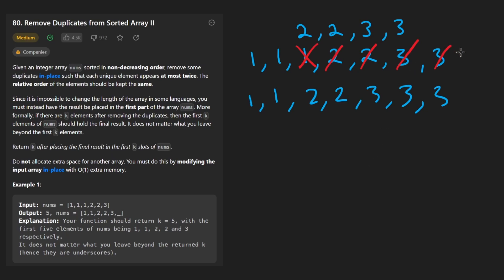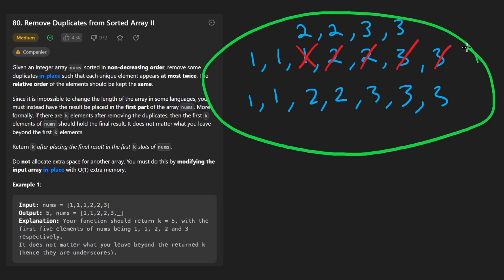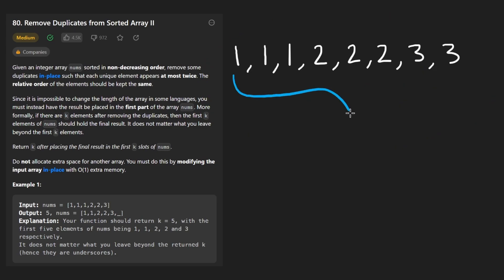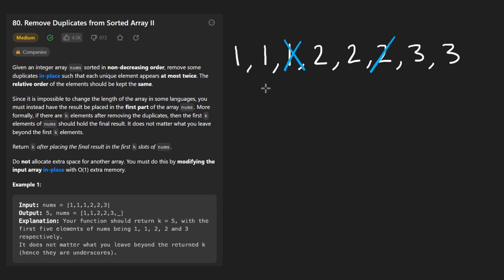Now, how exactly can we solve it? That's the tricky part. I'll show you a valid way, but first let's go over the thought process with a slightly different example — I basically just added another two. So if you try to solve this like the first version, Remove Duplicates from Sorted Array, what you would do is have two pointers: a left pointer and a right pointer. Initially they're both going to start at the beginning, and we're going to take the right pointer and increment it.